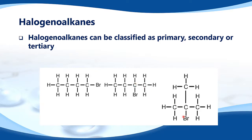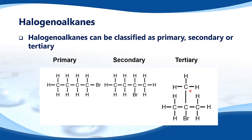Here we have the bromine, attached to the carbon atom. This carbon atom is attached to one, two, three other carbon atoms, so that makes it a tertiary halogenoalkane.